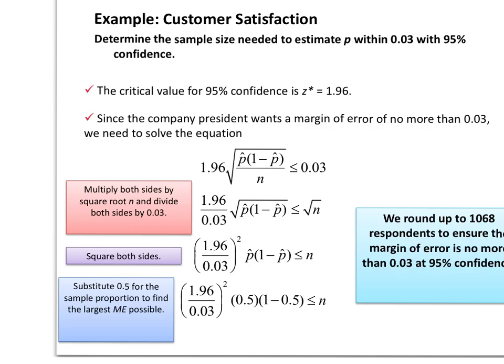Here's an example of how that would work. Let's say we wanted to determine the sample size needed to estimate p within 0.03 with a 95% confidence interval. The critical value for a 95% confidence, if we use either table A or table C, would come out to be 1.96. Then we would set the equation, take the z star times the standard deviation, and set it less than or equal to our margin of error, which would be 0.03.